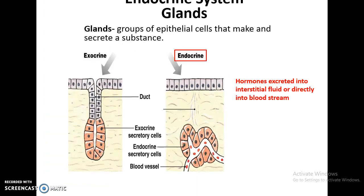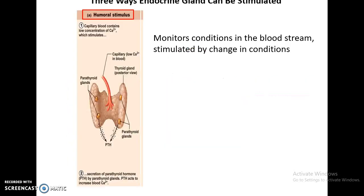Glands, as we know, come in two types. Exocrine glands have a duct and secrete things on a surface. And endocrine glands will secrete their hormones either into the surrounding fluids or into the bloodstream.